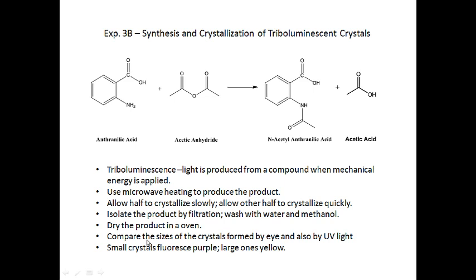We'll place the product on an aluminum weighing dish or a watch glass and dry it in the oven to remove residual solvent — either water or methanol. Then we'll compare the sizes of the crystals by eye and by UV light. Triboluminescent crystals that are very small fluoresce purple under ultraviolet light, while very large crystals actually fluoresce yellow. We've had marginal success observing this in the past, but both sets of crystals should fluoresce.